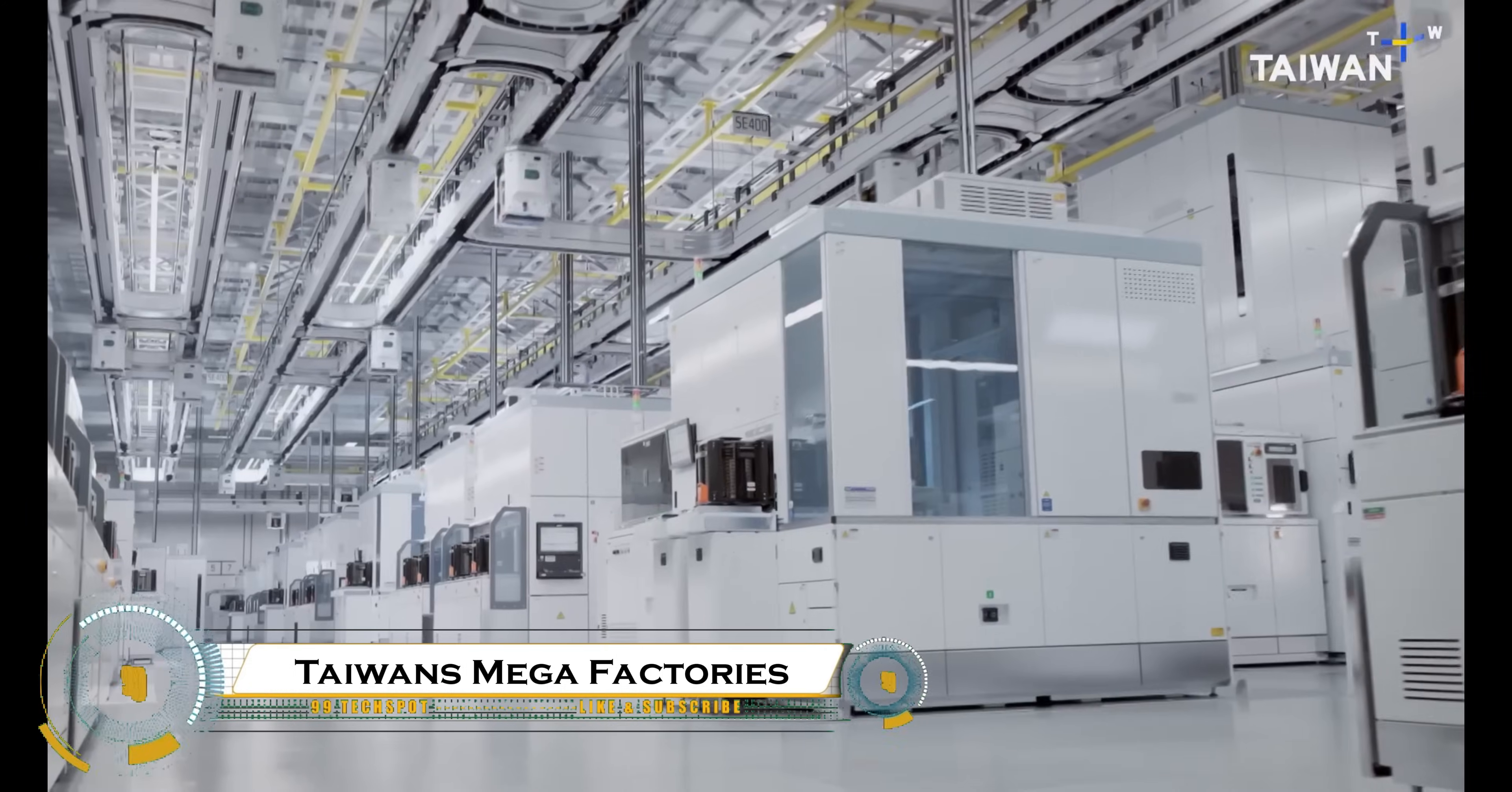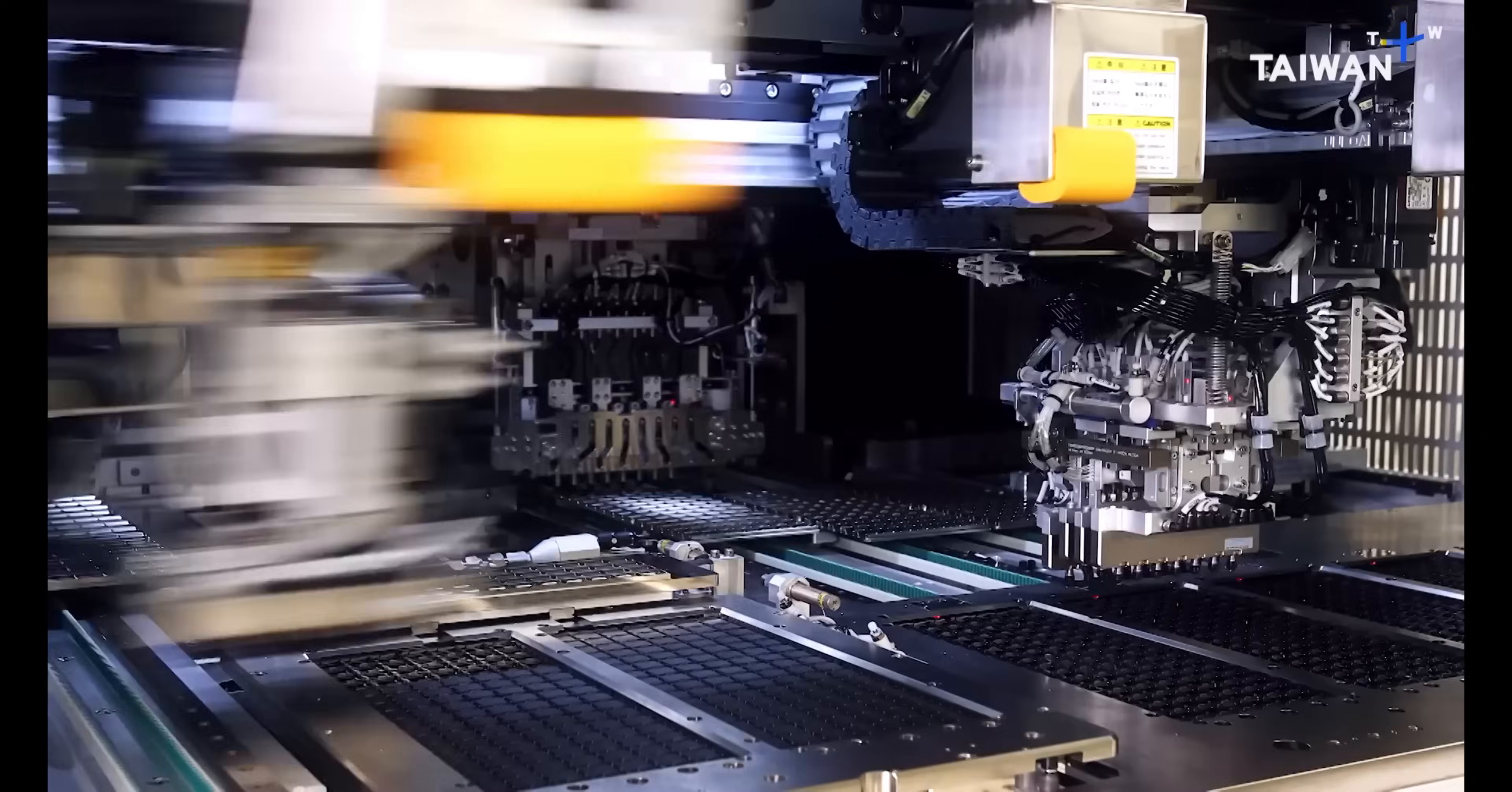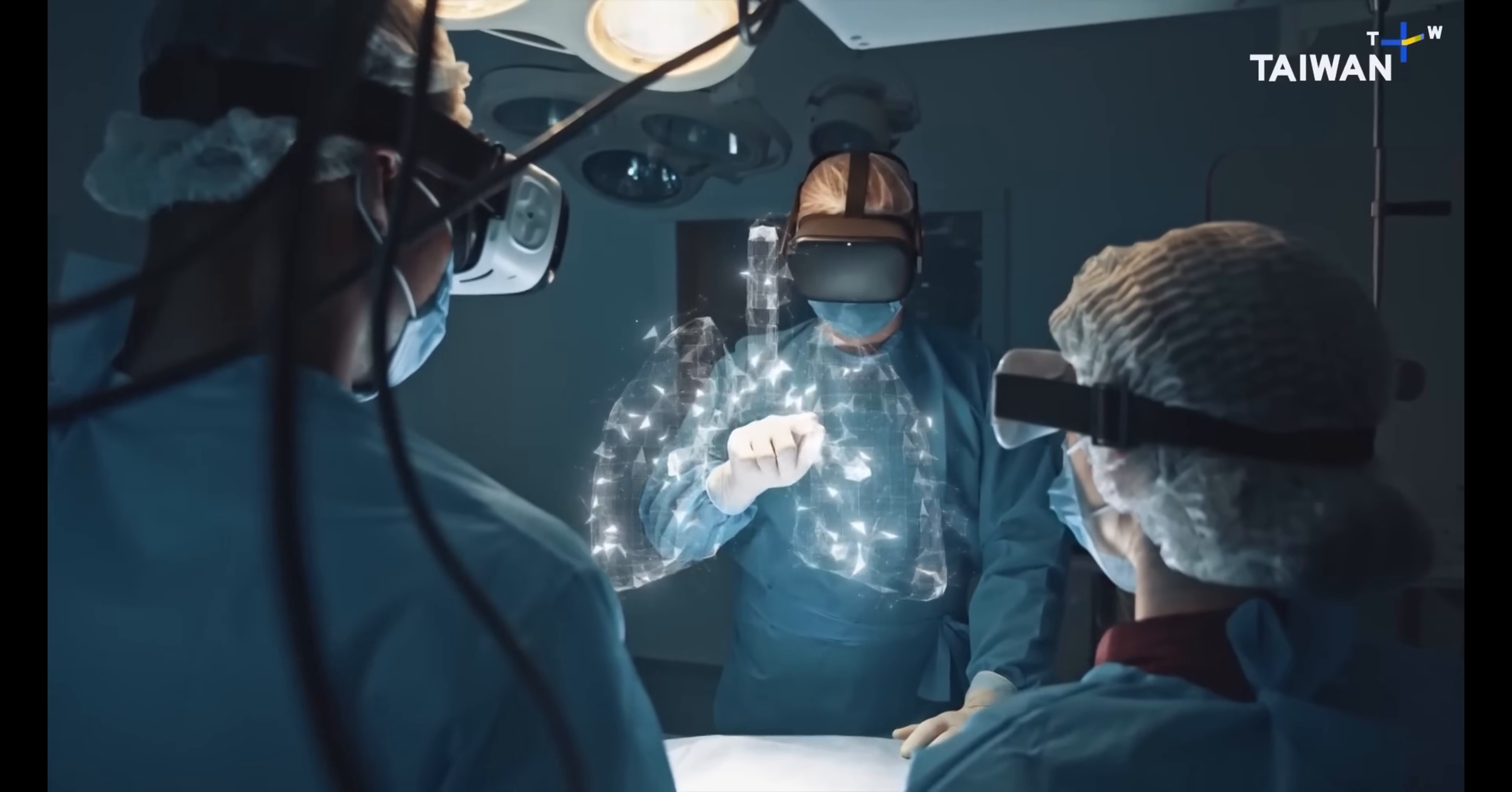Taiwan's Mega Factories Episode 1 takes you inside some of the world's most advanced and efficient production facilities, showcasing Taiwan's dominance in manufacturing and technology. From semiconductors that power global electronics to cutting-edge robotics and automation, these mega factories represent the pinnacle of precision engineering. Taiwan is home to industry giants like TSMC, Foxconn, and ASUS, producing everything from microchips to smartphones and electric vehicles.